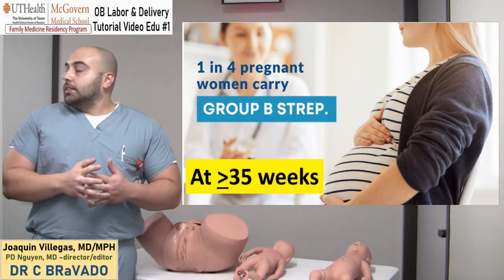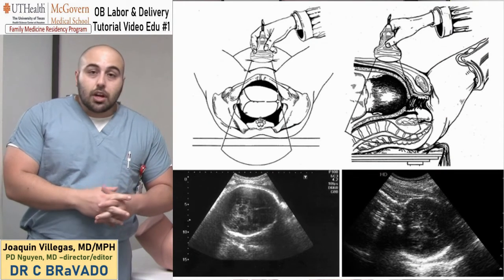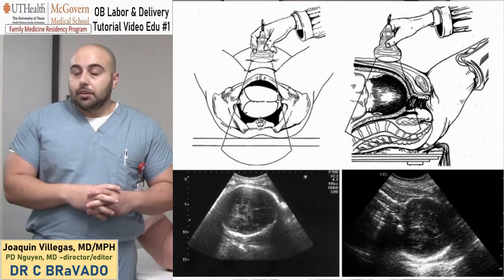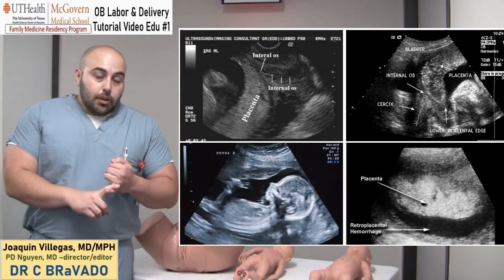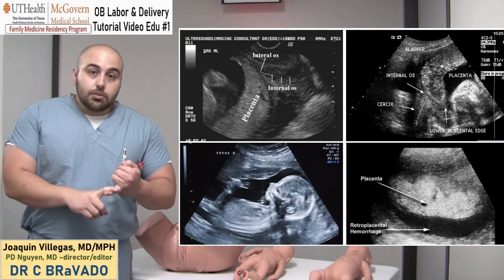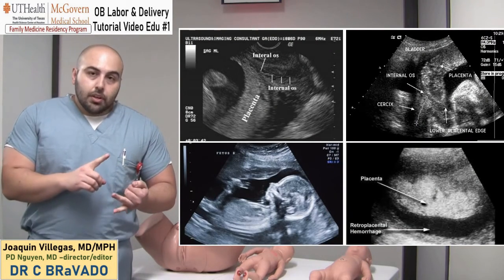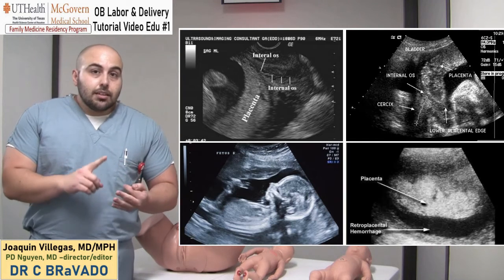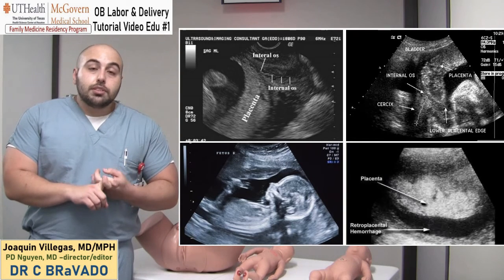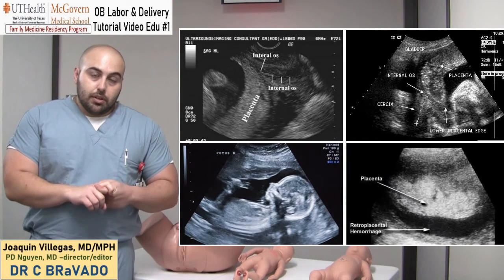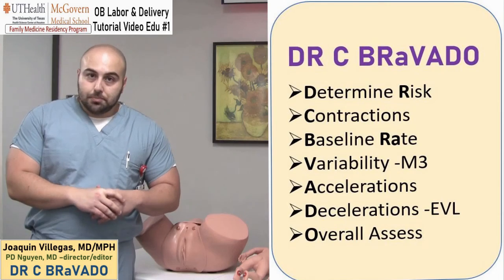And then the last one is the ultrasound. For the ultrasound, we're basically looking for the number of fetuses — if it's one versus two, possibly more — the placenta, amniotic fluid level, and the presentation of the baby, vertex versus breech.